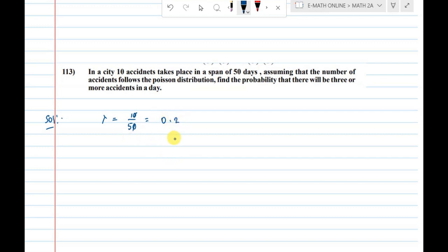So lambda value equals 0.2. Assuming that the number of accidents follows Poisson distribution, find the probability that there will be three or more accidents in a day.